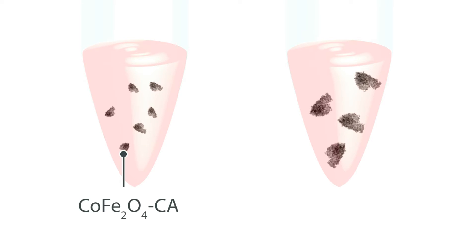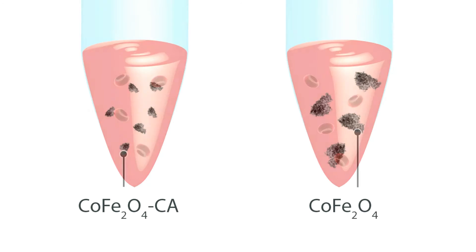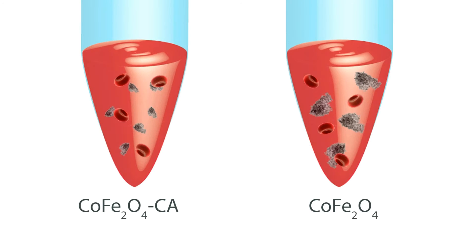We used two types of cobalt ferrite nanoparticles in suspension: citrate acid absorbed and bare ones. Washed human red blood cells were separately incubated in suspensions of both types of nanoparticles.